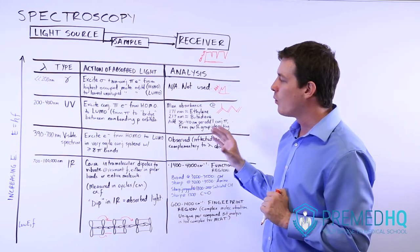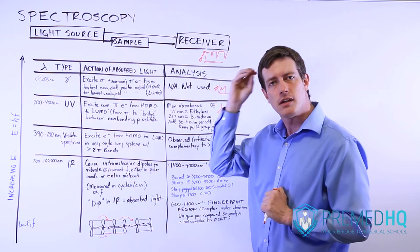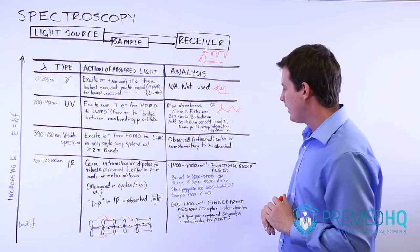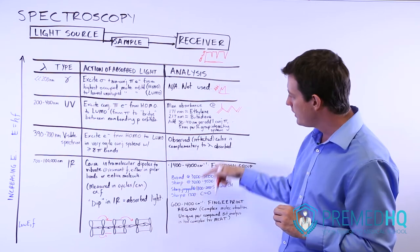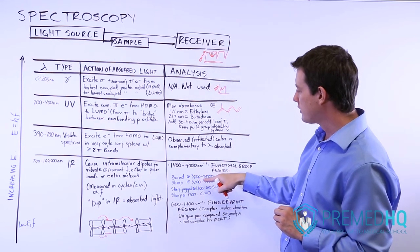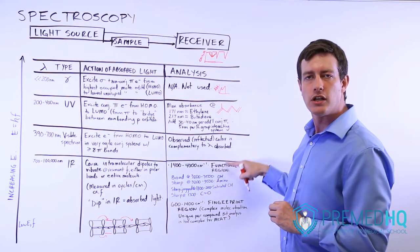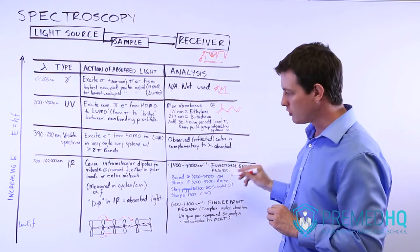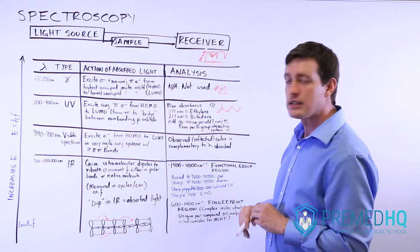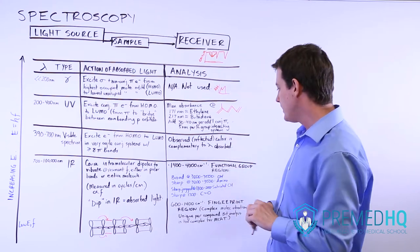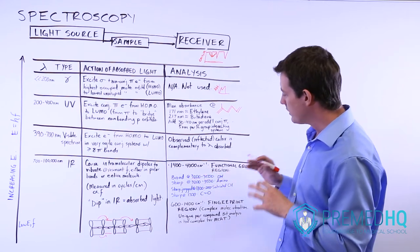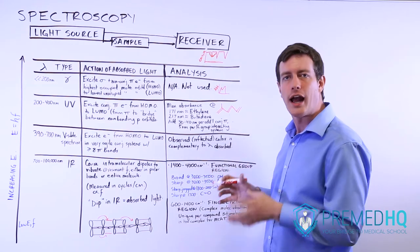There are a few values worth committing to memory for an organic chemistry class or the MCAT. If you see a broad dip at the 3200 to 3500 range — measured in cycles per centimeter (cm⁻¹) — that tells you that you have an OH group, an alcohol functional group.